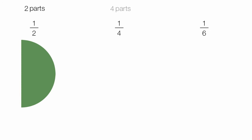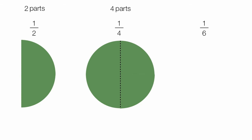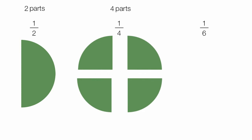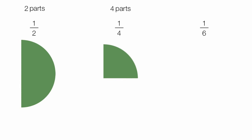For 1/4, I take a circle and cut it into four parts: 1, 2, 3, 4, and I keep one part, which is the numerator.